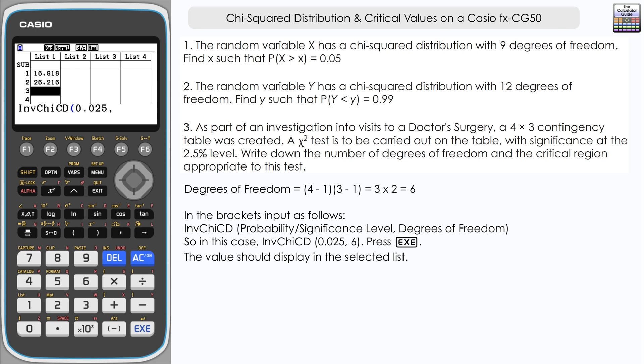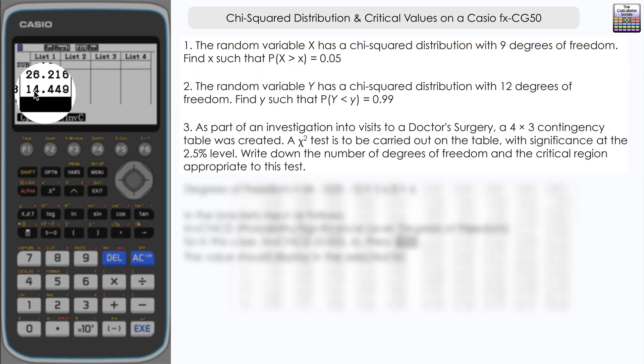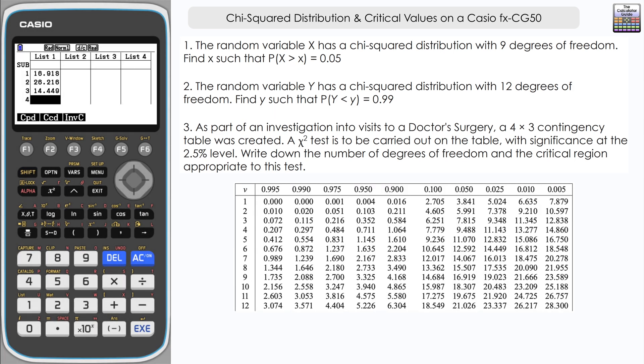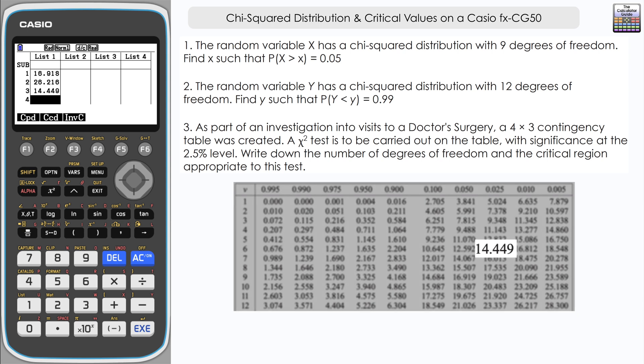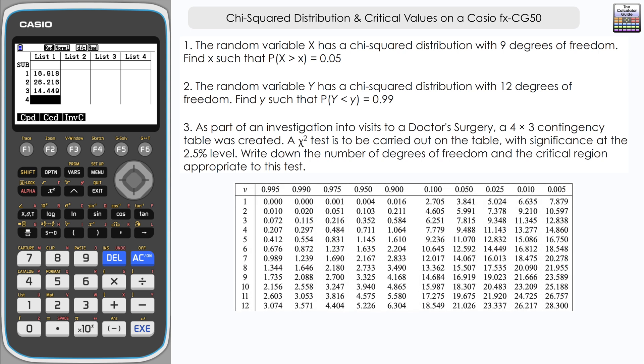Close the brackets, press execute, and here we have our result: 14.449. Quick cross-reference of that against the table just double-checking. Again, we're getting the same values. And what we could do, say that we had a set of data that we could put in our 4 by 3 contingency table.